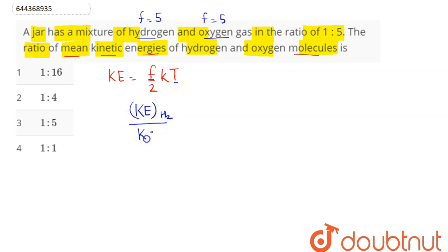hydrogen divided by kinetic energy for oxygen comes out as (5kT/2) ÷ (5kT/2). This simplifies to 1:1,